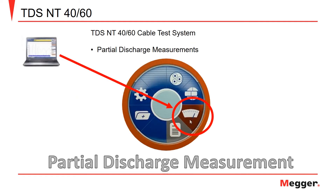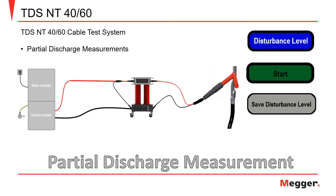Now you are ready to select the PD measurement icon and begin PD measurements. The first step of the measurement process is to measure and set the disturbance level. Select the disturbance level icon and start the measurement. Once the process is complete, save the disturbance level.